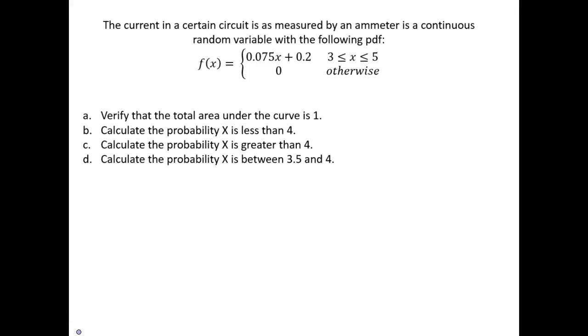The current in a certain circuit is measured by an ammeter and is a continuous random variable with the following probability density function. So f is equal to 0.075x plus 0.2 and this exists from 3 to 5, where if it is anywhere else the probability is 0.